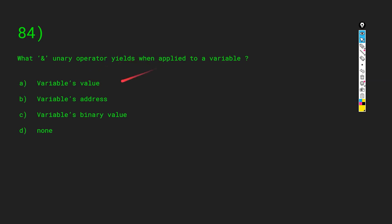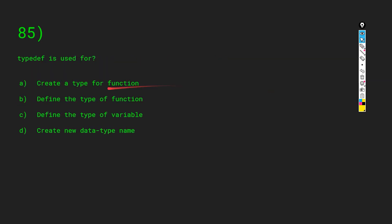What does the unary & operator yield when applied to a variable? The options are: a variable's value, a variable's address, a variable's binary value, or none. The answer is B — the & symbol is used to yield a variable's address. For typedef: it is used to create a new data type name, so the answer is D.